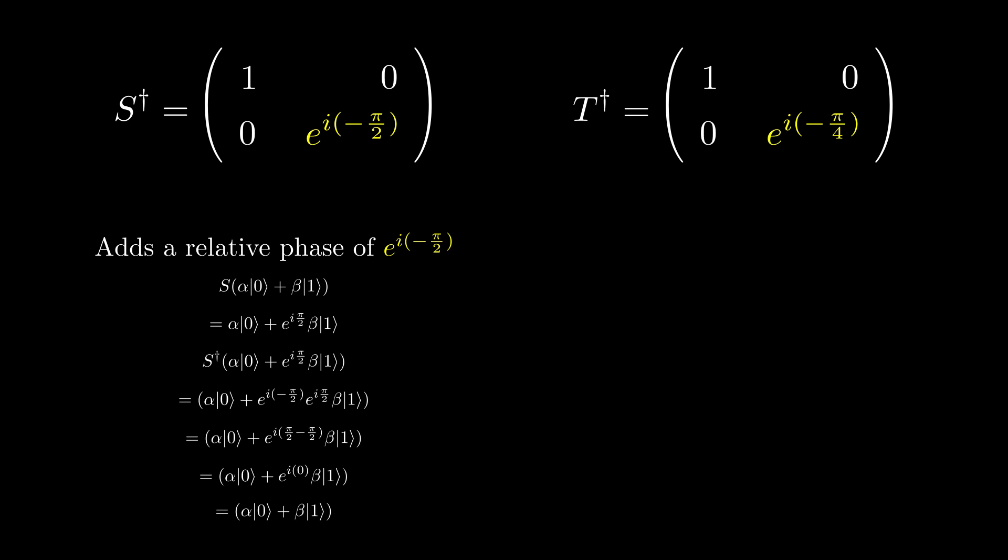We also have the T dagger gate, which is the same thing as the S dagger, but adds a relative phase of negative pi on 4 radians instead, meaning it is the inverse of the T gate.